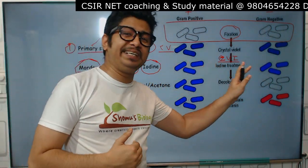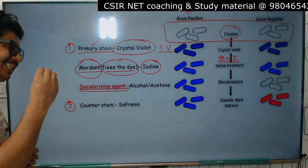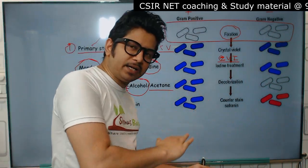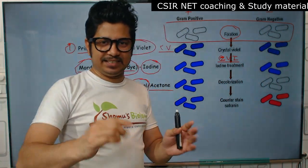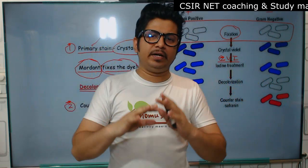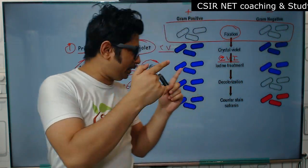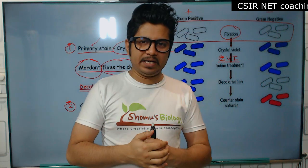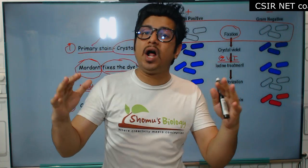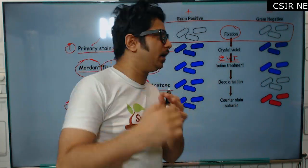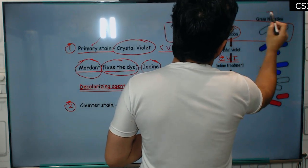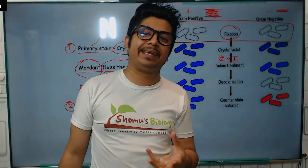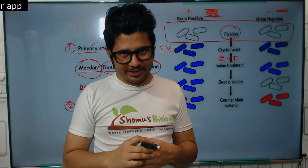Once the staining is done, the third and crucial step is decolorization. We decolorize the bacteria using a decolorizing agent — in this case, alcohol or acetone. This alcohol or acetone washes the crystal violet-iodine complex. You may ask: we used iodine to retain the crystal violet, so how does alcohol or acetone cause them to release the CVI complex? The answer lies in the difference between gram positive and gram negative bacteria cell wall structure. Gram positive bacteria have a much thicker cell wall, while gram negative bacteria have a very thin peptidoglycan layer.